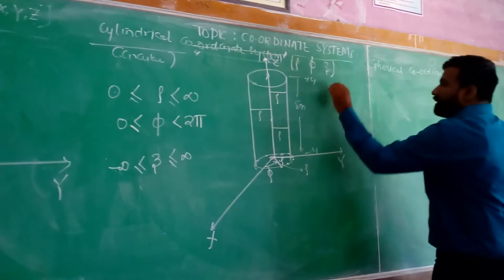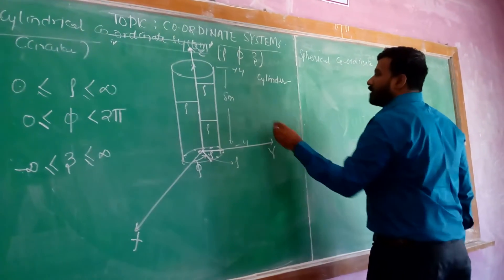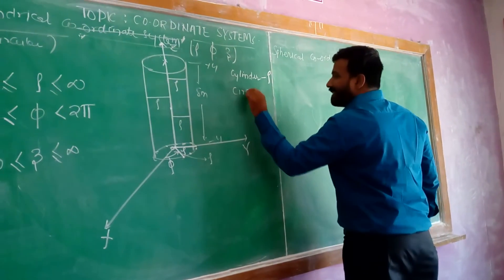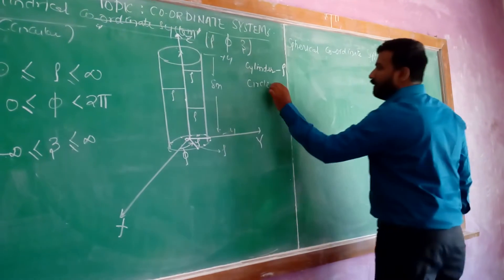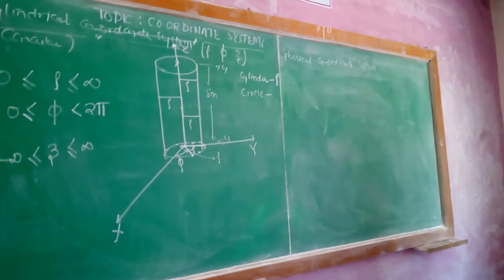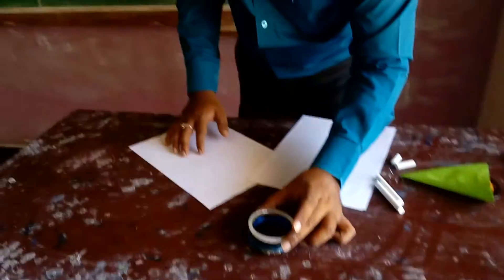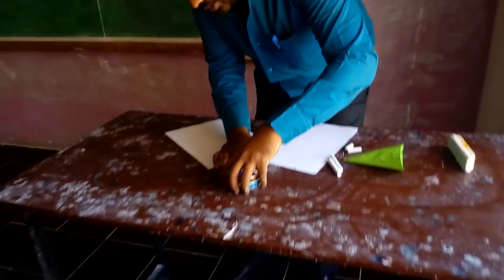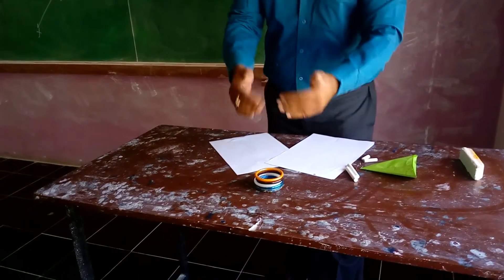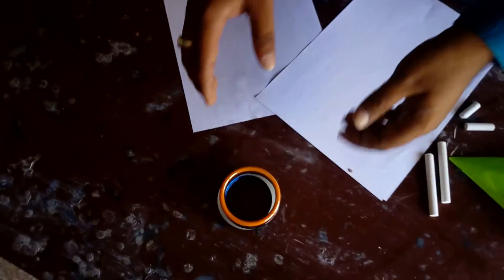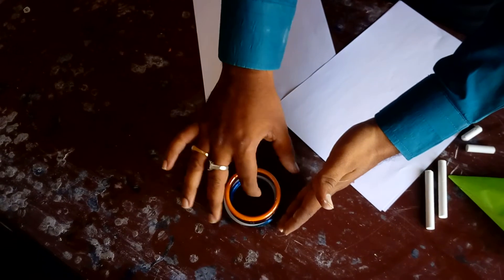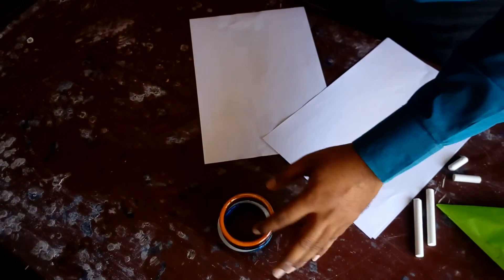Now, if you take a cylinder, what is constant for a cylinder? For a cylinder, rho is constant. To demonstrate: if I take different colored circles and integrate them together, we get a cylinder. Looking at the top view of the cylinder shows only one circle. Therefore, for a cylinder, rho — the radius — is constant.